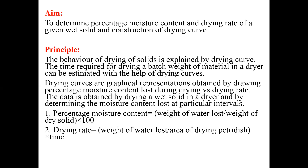Drying rate is calculated by dividing the weight of water lost by the area of the drying petri dish multiplied by time. To summarize the two calculations: percentage moisture content equals weight of water lost divided by weight of dry solid, multiplied by 100; and drying rate equals weight of water lost divided by area of drying petri dish.